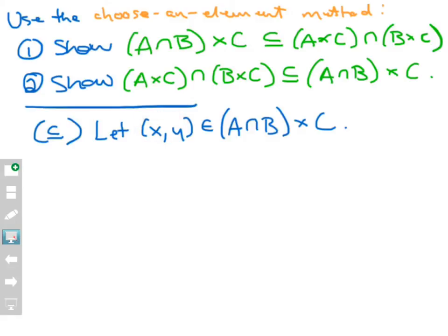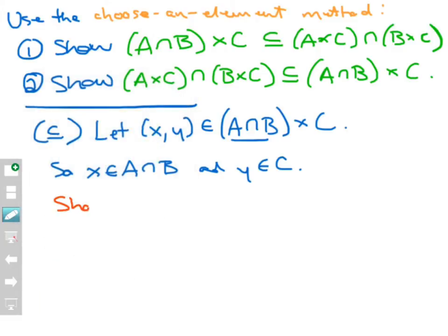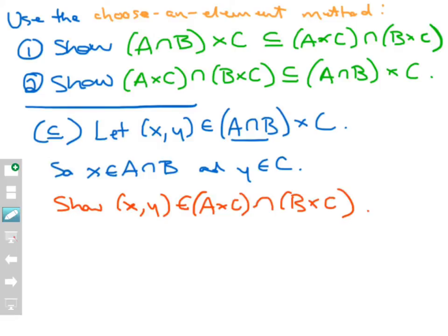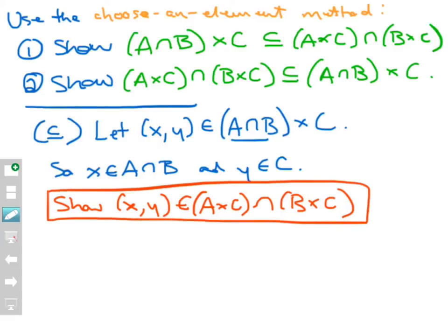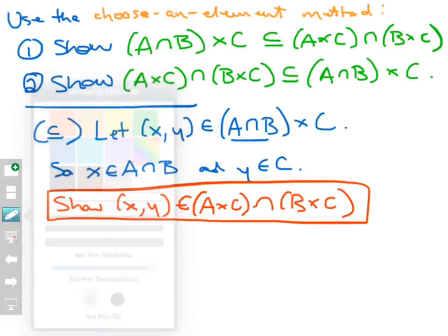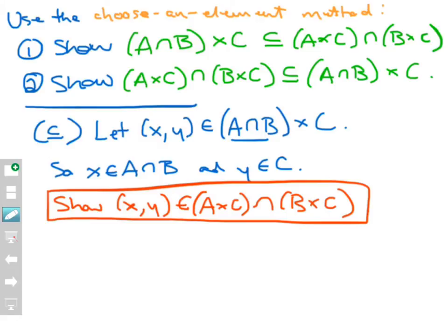If I'm choosing an element inside a Cartesian product, that is not just an X — it's an ordered pair, so I have to have two coordinates. Since X, Y belongs to this Cartesian product, what that means is that X belongs to the first set, A intersect B, and Y belongs to C. That's just the definition of Cartesian product. And it might be helpful to write down what I want to show: that X comma Y belongs to A cross C intersect B cross C. Now, X belongs to A intersect B means that X belongs to A and X belongs to B — that's the definition of intersection.